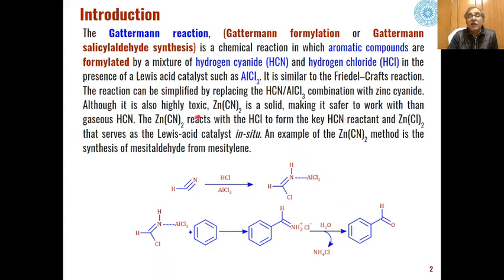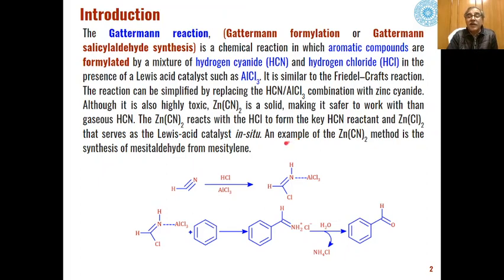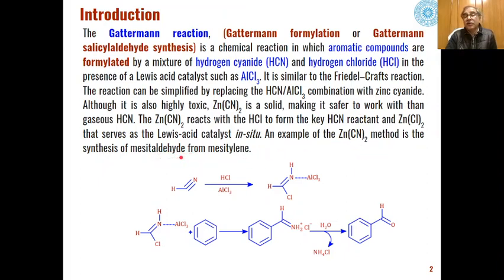As an alternative to the HCN and AlCl₃ combination, we can use zinc cyanide. Zinc cyanide will also act as an electrophile and serves as a catalyst for electrophilic aromatic substitution. It will in-situ generate the electrophile, and formylation can take place — for example, macetylene can be formylated when using zinc cyanide, giving macetaldehyde as the product.